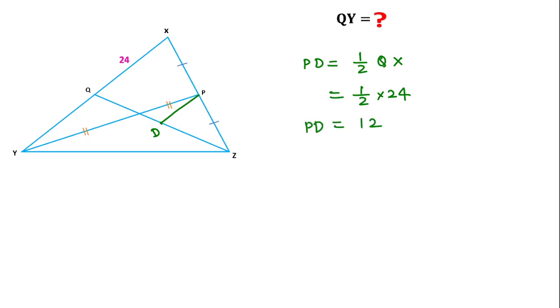And also we can see if we consider the intersecting point of PY and QZ is, let's suppose, O, then we can say this angle and this angle will be equal by vertically opposite angles.